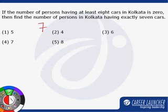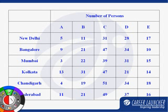When we go back to the table, we see that the value of A for Kolkata is 13, for B it is 31, C is 47, D is 21, and E is 14.